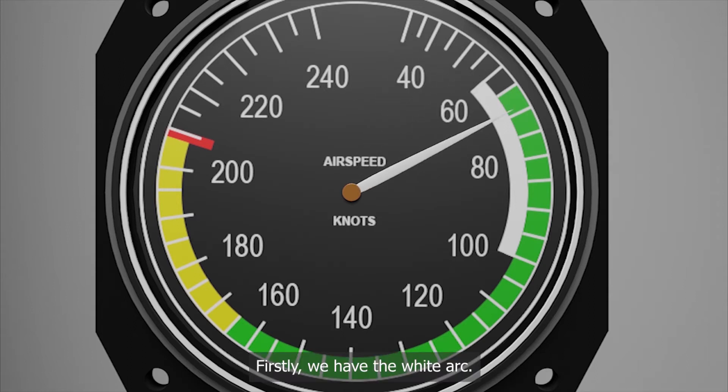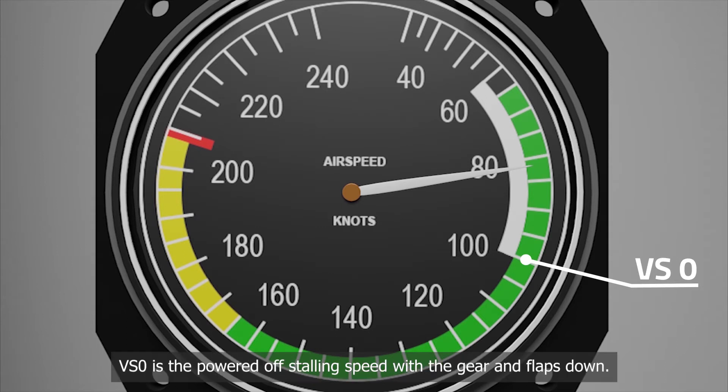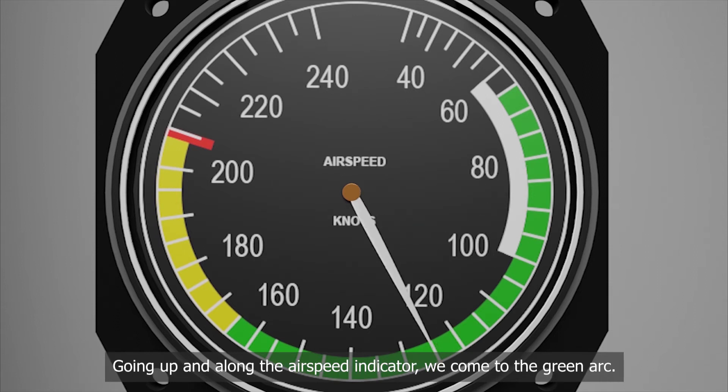Firstly, we have the white arc. The white arc is the flap operating scene. The bottom of this white arc is VS0. VS0 is the power off stalling speed with the gear and flaps down. Going up and along the airspeed indicator, we come to the green arc.